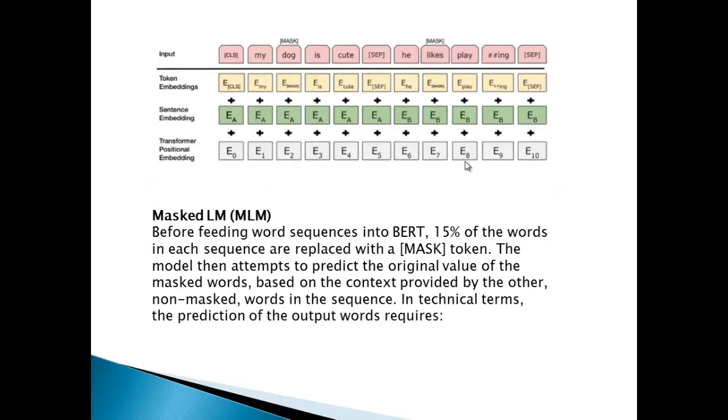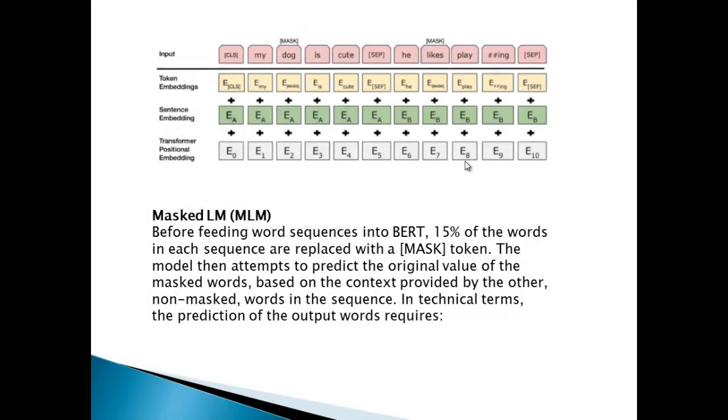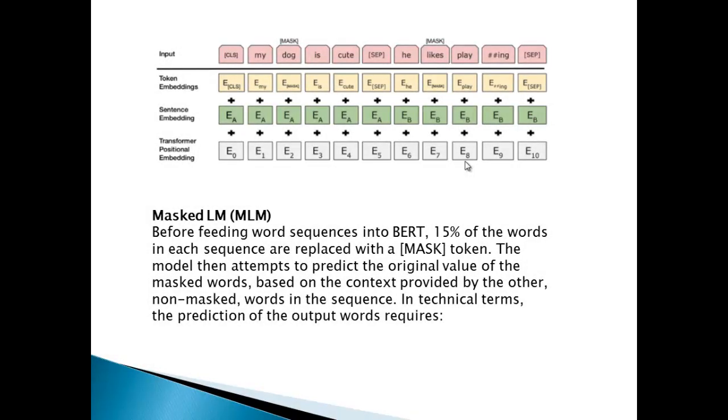I talked about the masked language model when discussing the transformer architecture. Before a word is fed to BERT, 15% of the words in each sequence or sentence are replaced with the mask token, M-A-S-K. They're replaced with a blank and that blank is replaced with this hard-coded string, so BERT can understand this is a mask token it has to guess. The model then tries to predict what actually exists, what was there instead of that mask.